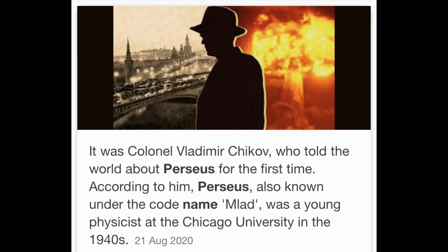Right now on screen you can see one word in particular: Perseus. That's who I think they're referring to. As you can see, it says Perseus, also known under the code name Mlad, was a young physicist at the University of Chicago in the 1940s, which is pretty much where the Cold War was based around. What I'm more focused on is the word Mlad, starting with a capital M, which in my opinion is who they're referring to in the letter as M.